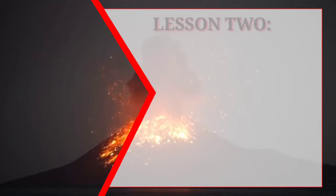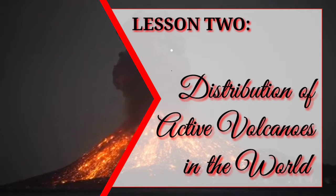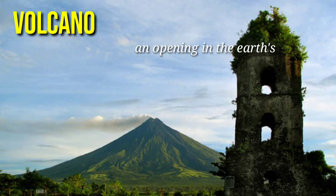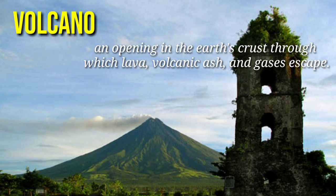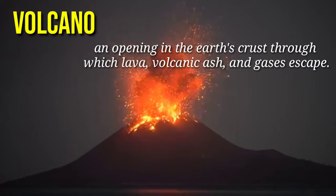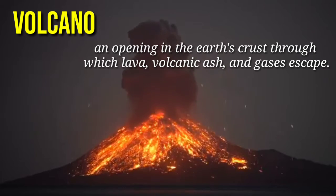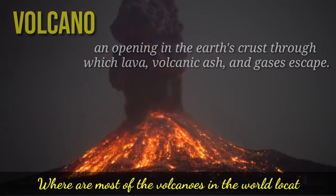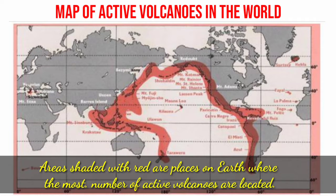Now let's discuss Lesson 2: Distribution of Active Volcanoes in the World. A volcano is an opening in the Earth's crust through which lava, volcanic ash, and gas escape. Beneath a volcano, liquid magma containing dissolved gases rises through cracks in the Earth's crust. Now, where are most of the volcanoes in the world located? Let's take a look at this picture showing the map of active volcanoes in the world.